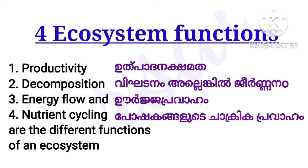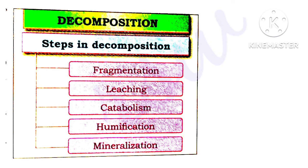An ecosystem has four functions: one, productivity (ulpadanakshamata); two, decomposition (vikharanam or jirnanam); three, energy flow (urja pravaham); and four, nutrient cycling (poshagangalude chakarika pravaham).